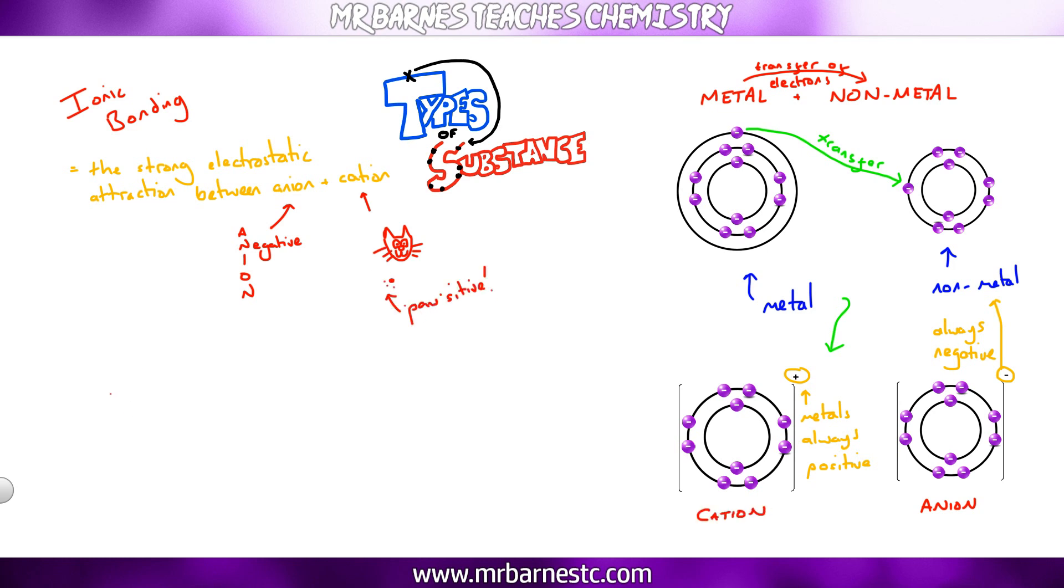Now there is an easy way to work out the charge of all your cations and anions. What you want to do is have a look at how many electrons there are in the outer shell. We're going to look at groups one, two, three, five, six and seven. We're not going to include group four because you won't be asked that in the exam.